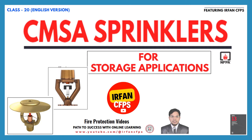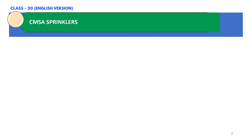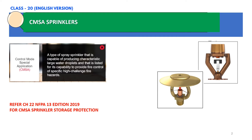Hello everyone, welcome back to my YouTube channel Irfan CFPS. We are continuing our class of NFPA 13 series. In today's session, we are going to understand the selection of sprinkler for storage application based on the CMSA approach. CMSA sprinklers refer to a specific type of sprinkler listed for storage application with increased severity fires. You can refer to NFPA 13 chapter 22, edition 2019, for CMSA sprinkler storage protection. In our next slide, we are going to take one example and try to select the CMSA sprinkler based on that particular scenario.